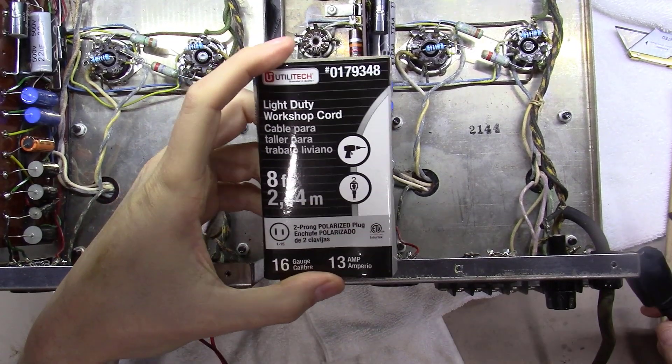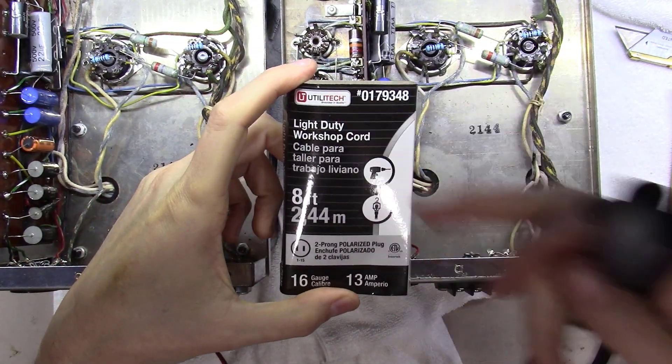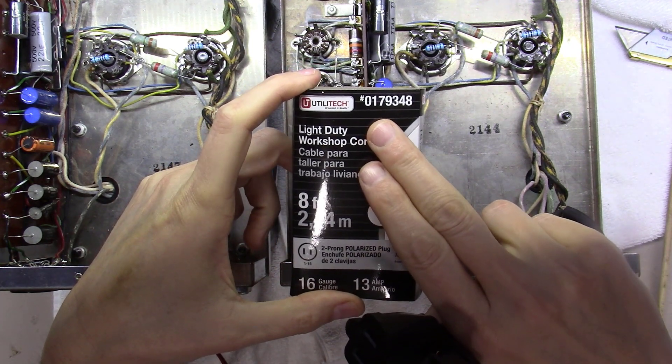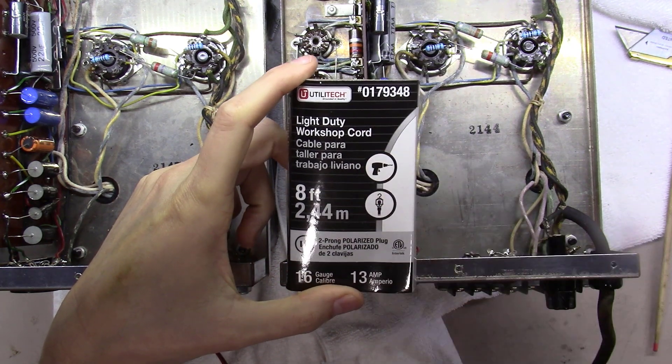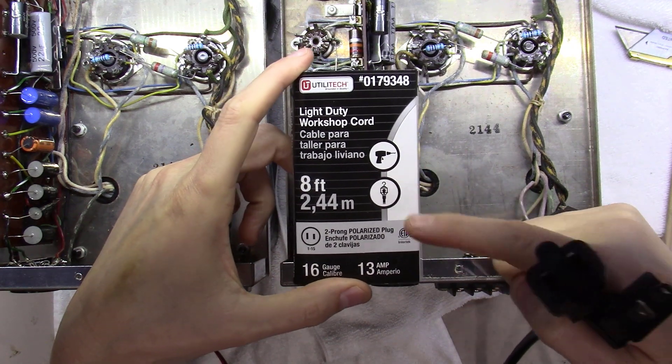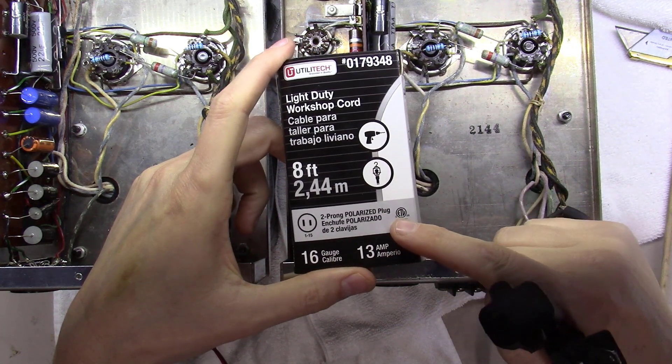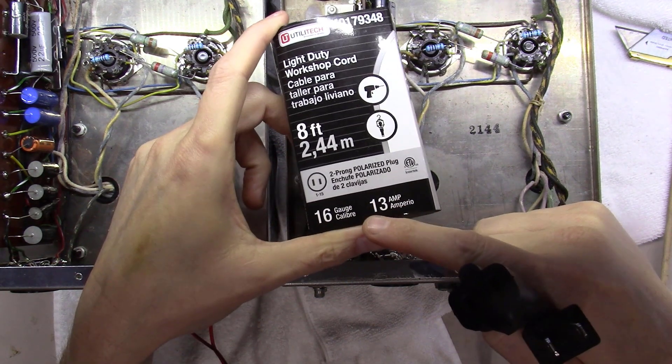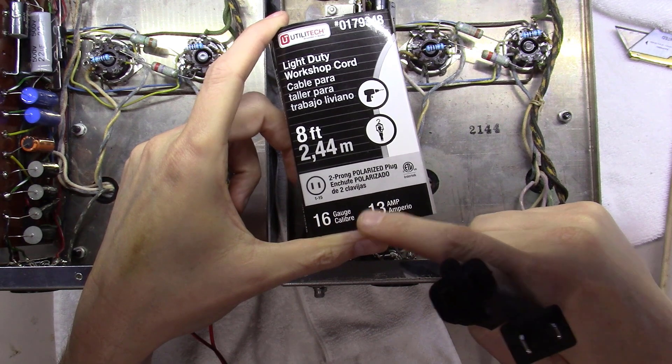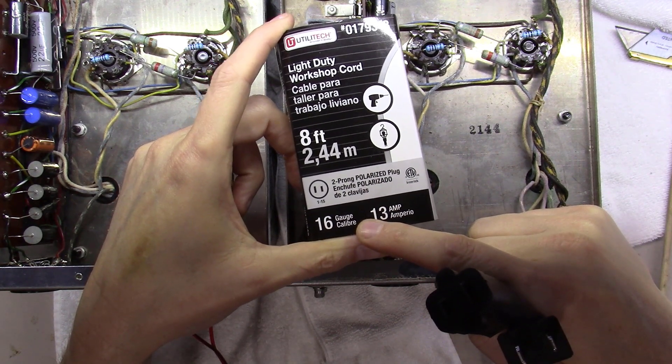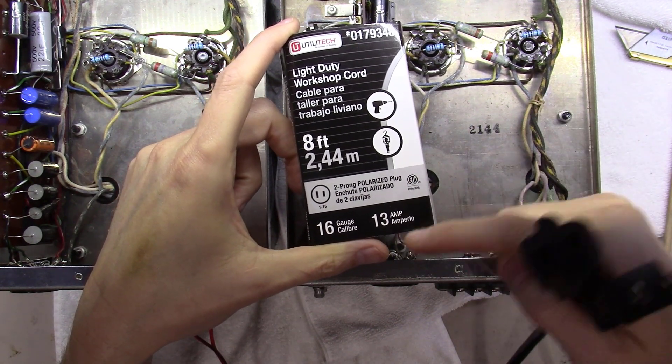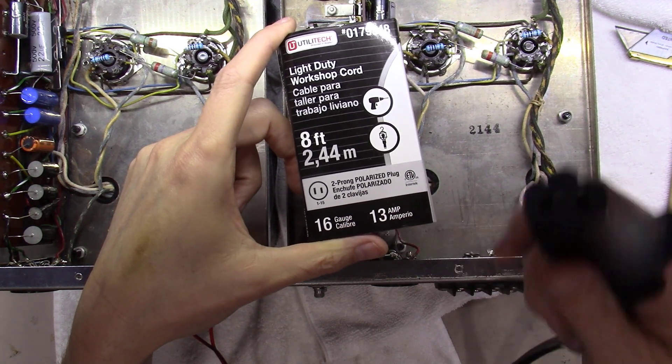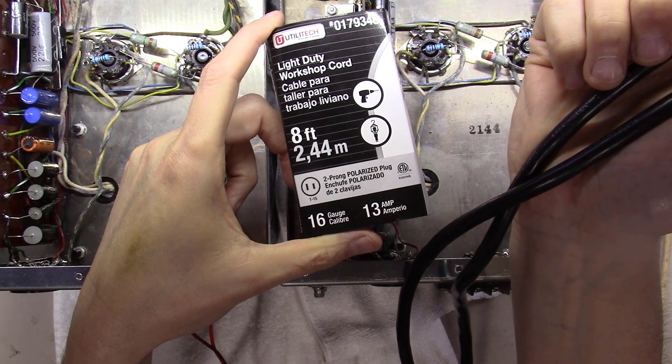What I found were these, and these are made by a little company called Utilitech. The number here is 0179348 and it's a light duty workshop cord. This is an eight foot cord and it is a two pronged polarized, and very important, it is 16 gauge. You don't want to go any smaller than 16 gauge, which would mean you don't want to go higher in number.